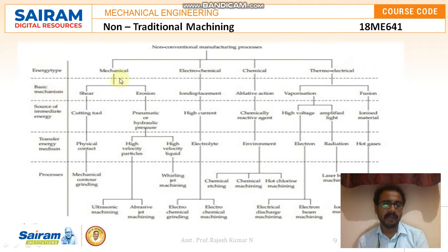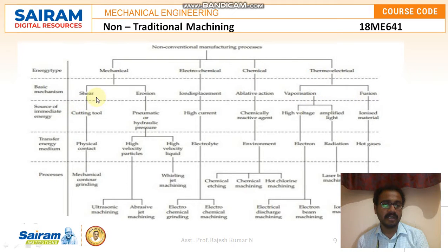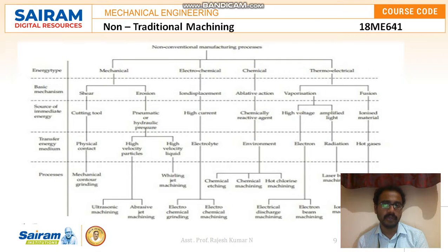Looking at the basic mechanisms: under mechanical we have shear or erosion; under electrochemical we have ion displacement; under chemical we have ablative action; and under thermoelectrical we have vaporization, fusion, and ionized material. Under shear, based on the source of immediate energy, we have cutting tools, and for erosion we have pneumatic or hydraulic pressure. Under electrochemical ion displacement, high current is usually provided, and for chemical processes, chemically reactive agents are used.